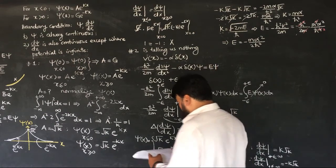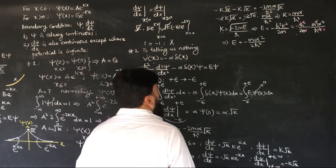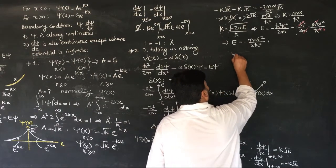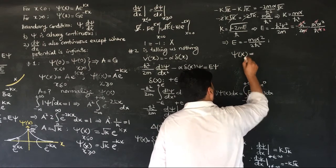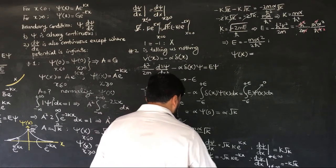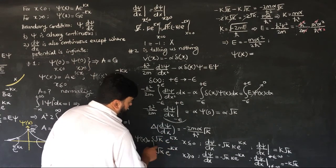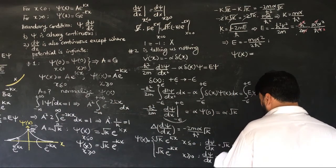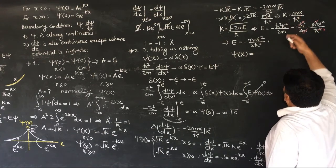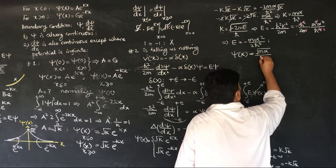So the energy of the bound state comes out to be E = −mα²/2ℏ². And our wave function ψ(x) = √k · e^(−k|x|), where k = mα/ℏ². We can write √k = √(mα/ℏ²) = √(mα)/ℏ.